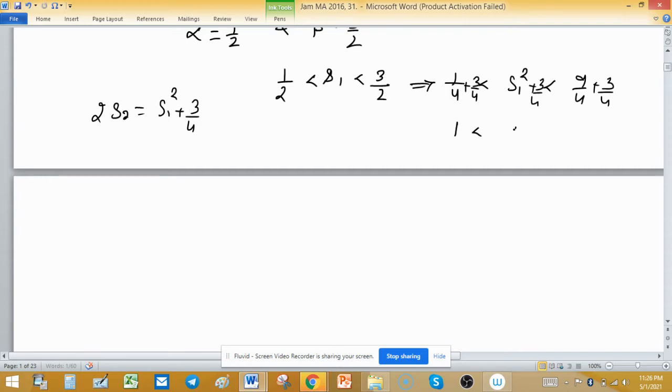It will be 2 S2 less than 3 so S2 is less than 3 by 2 and greater than half after dividing by 2, because 2 is positive so sign of inequality doesn't alter. This means S2 also lies between 1 upon 2 and 3 upon 2. Similarly, you can verify that other terms will also lie between 3 by 2 and half.